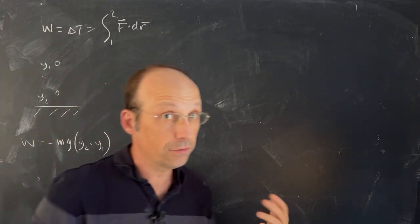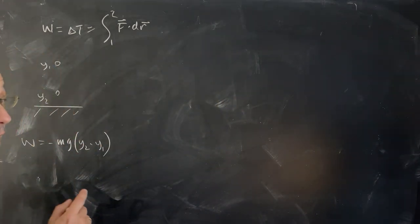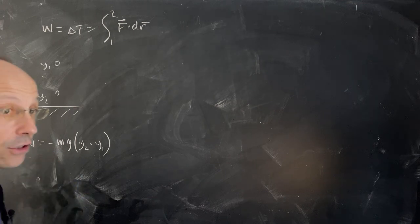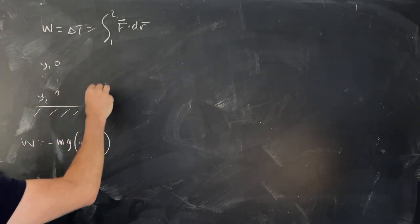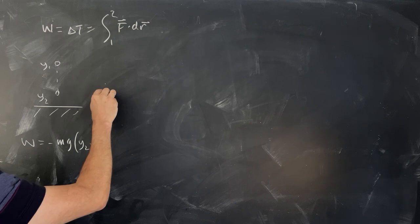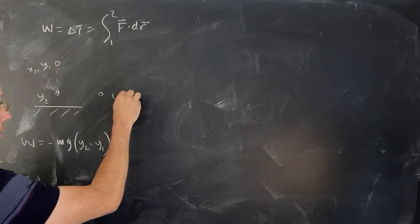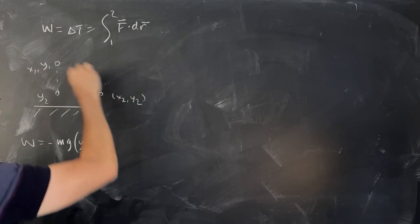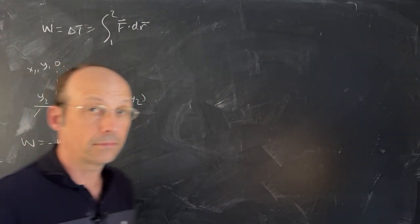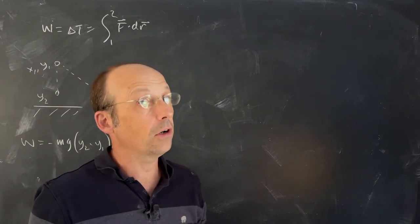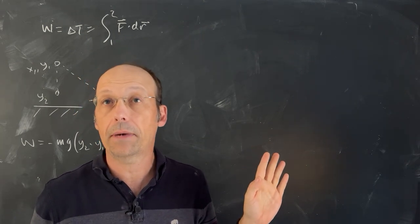If you can't find these videos, just comment - I usually reply to the comments down below. But what if the path is not so trivial? What if instead of going straight down, I want to go to a point over here - from (X1, Y1) to (X2, Y2) along that diagonal path? It's a little bit more difficult, but let's just calculate the work along that path.